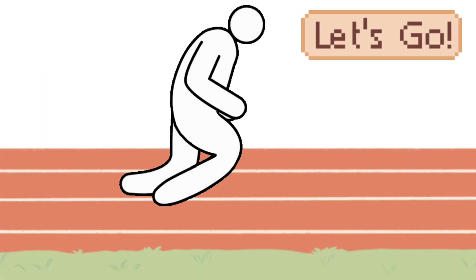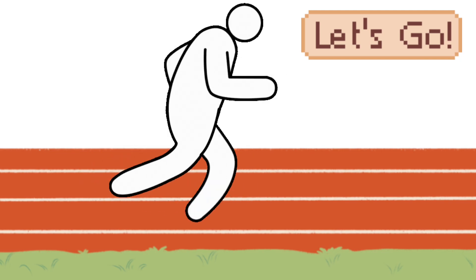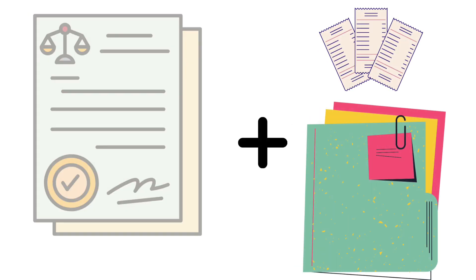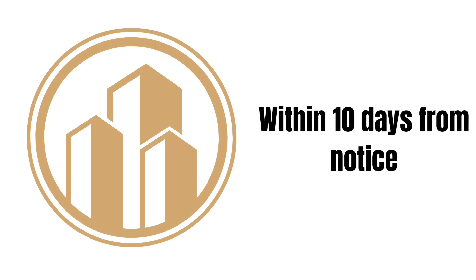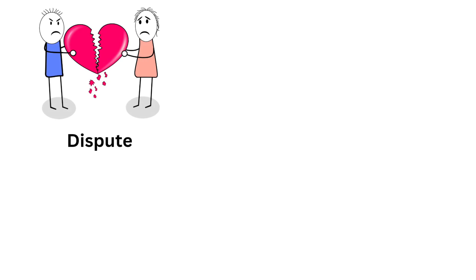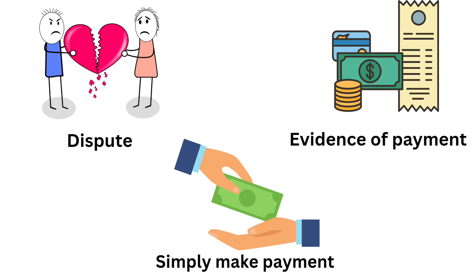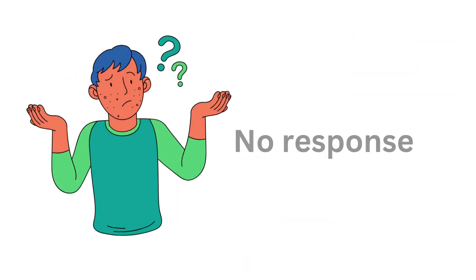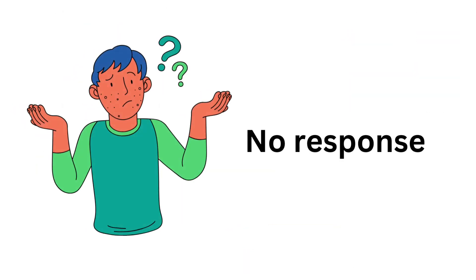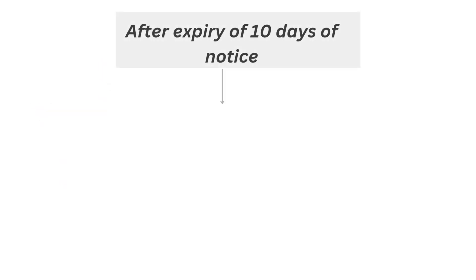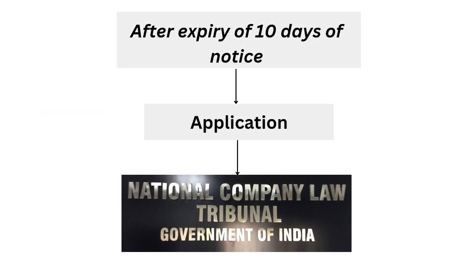For initiating the Corporate Insolvency Resolution Process, the operational creditor has to send a demand notice to the financial debtor along with a copy of the invoices and other documents. The debtor must revert within 10 days and should bring about claims regarding any existing dispute, or provide evidence of payment or that all dues have been paid. In case there is no response from the debtor, the operational creditor can file an application to the National Company Law Tribunal after the expiry of 10 days.